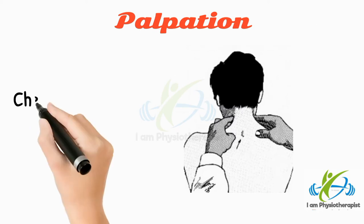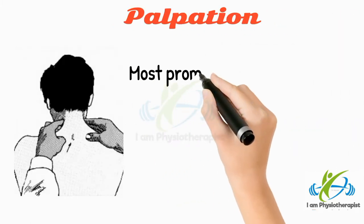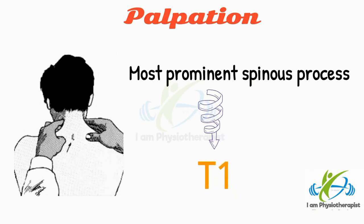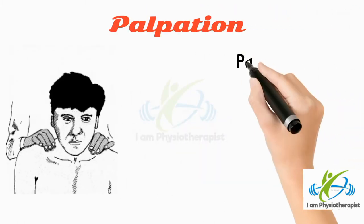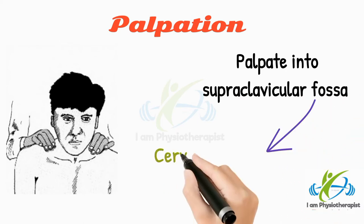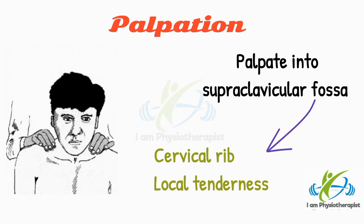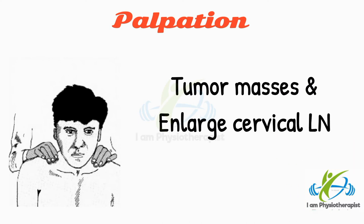Next, palpate the lateral aspect of the cervical vertebrae and look for any tenderness or masses. The most prominent spinous process is that of the T1 vertebra. Palpate into the supraclavicular fossa and check for the prominence of a cervical rib along with local tenderness. Also look for tumor masses and enlarged cervical lymph nodes.